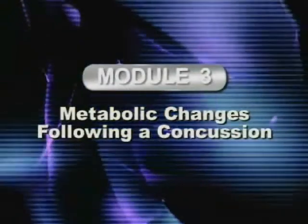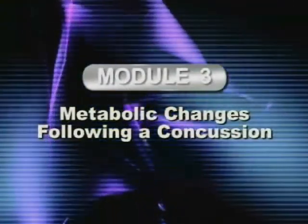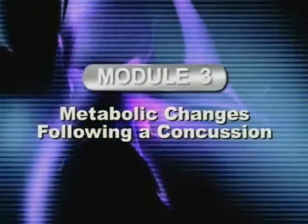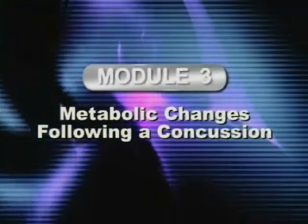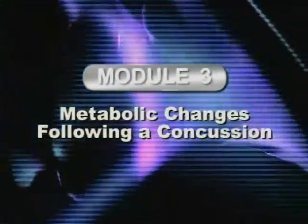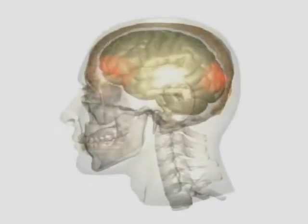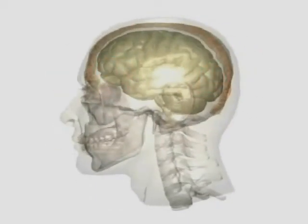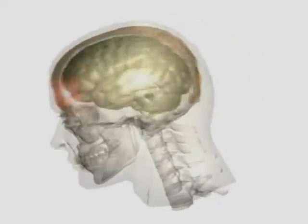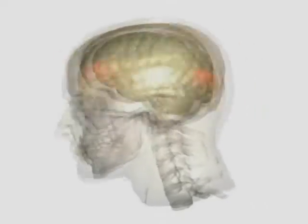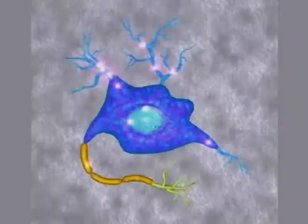Module 3: Metabolic Changes Following a Concussion. The violent movement of the brain inside the skull produces an alteration of consciousness in several ways. The long axons